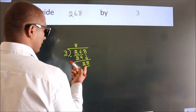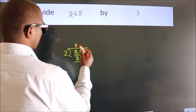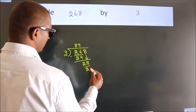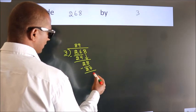A number close to 28 in 3 table is 3 9s, 27. Now, we subtract. We get 1.